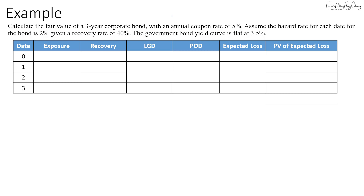We will follow a tabular format: we'll calculate the exposure, the recovery amount, the loss given default, the probability of default, the expected loss, and then the PV of the expected loss. Once we sum up the PV of the expected loss we get the CVA, and then we subtract the CVA from the fair value of the risk-free bond to get the fair value of this corporate bond.